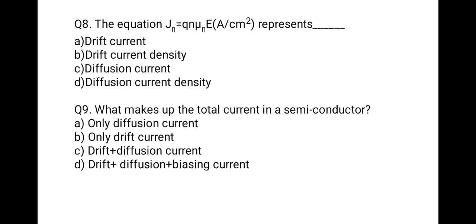Question 8: The equation Jn equals q times n times mu_n times E, with units of A per centimeter squared — this equation represents drift current density.